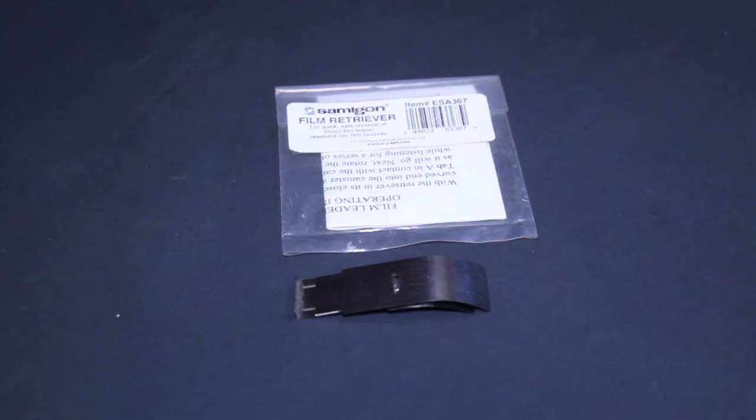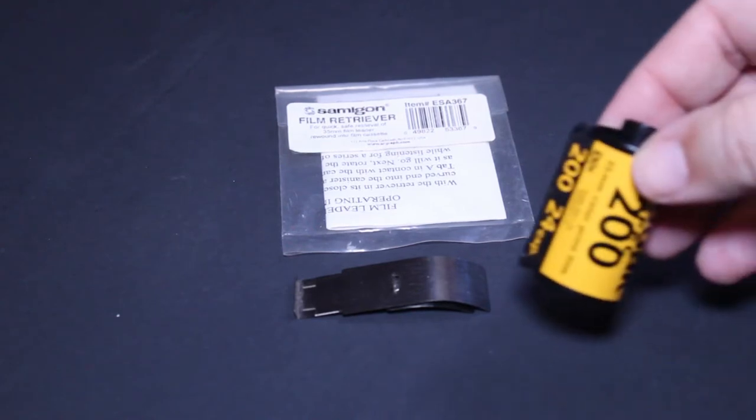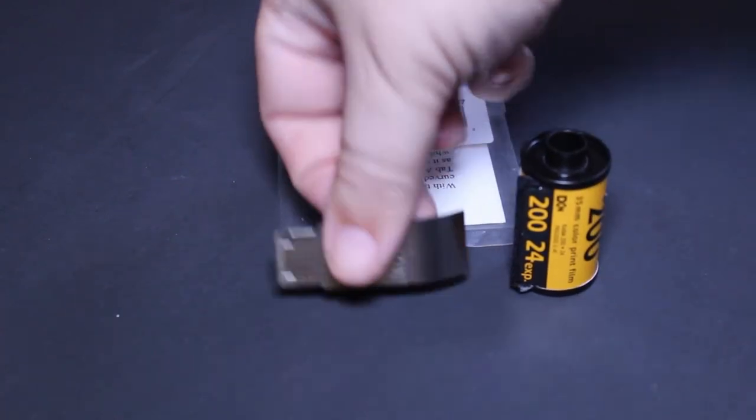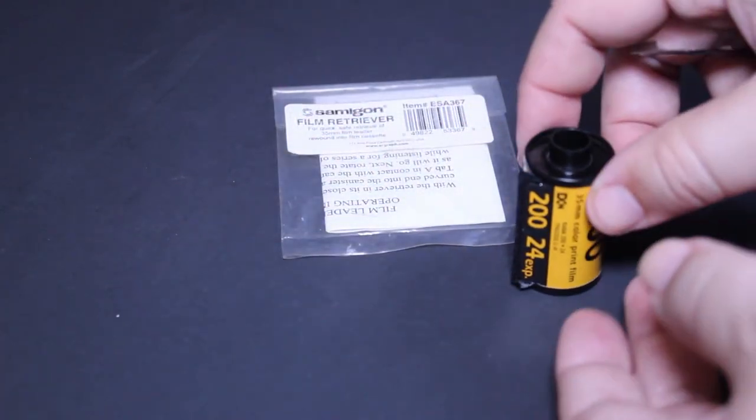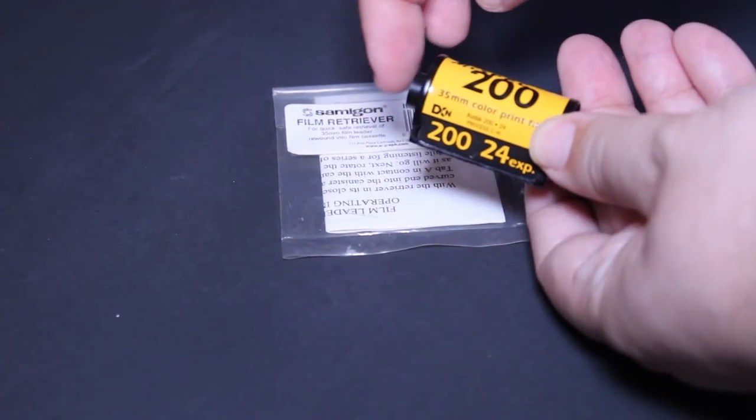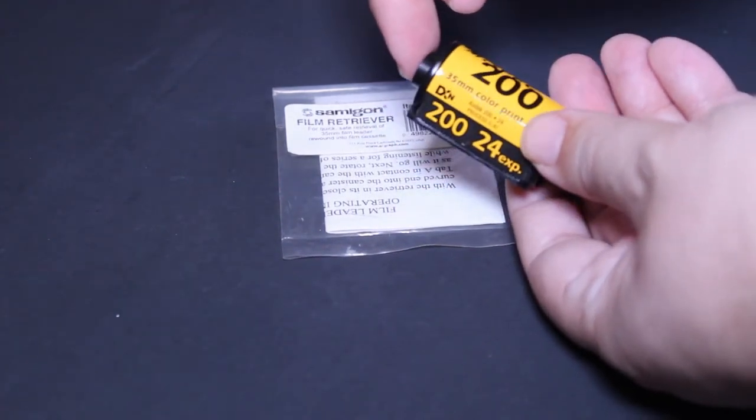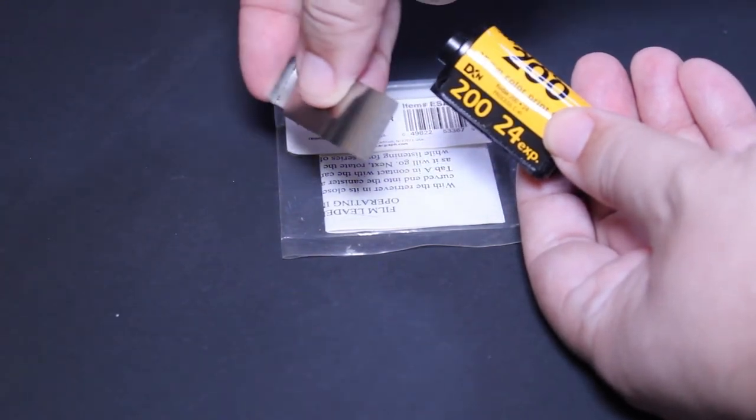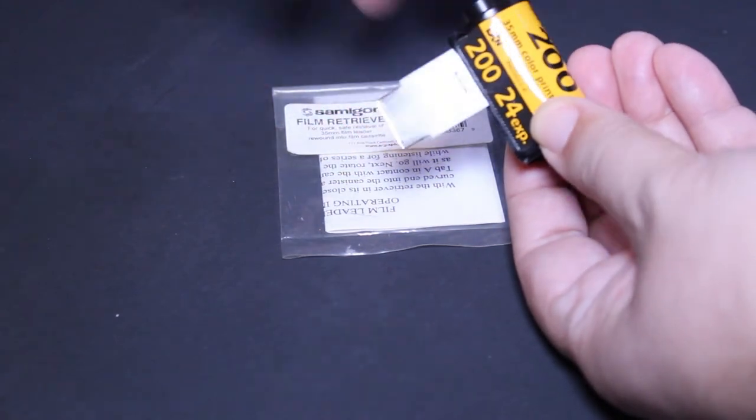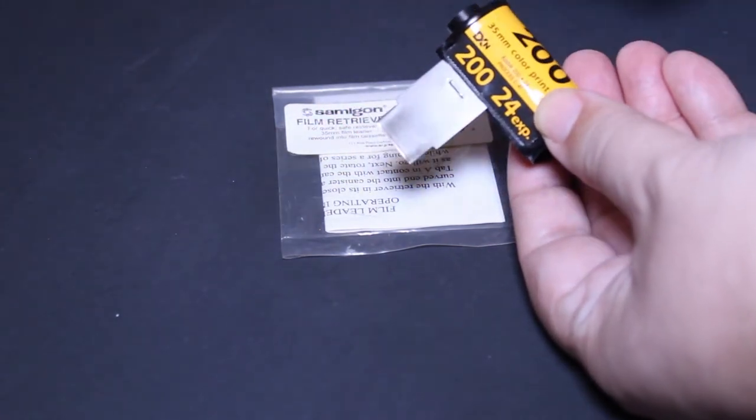So I have this roll of film here, this Kodak 200 film, and I'm going to take my film retriever and take the end of the roll of film, this end here with the little post sticking out of it. I take my film retriever and stick it in on that end, just like that.